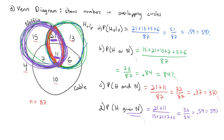So in this video we've been looking at basic probabilities — simple probability, compound probabilities with or, and, and given. We've looked at situations where we described the scenario such as rolling a die, we've looked at contingency tables, and we've looked at Venn diagrams. Each of those can be used to help us calculate these probabilities. The best way to get good at them is to practice, so now it's your turn — let me know if you have any questions.